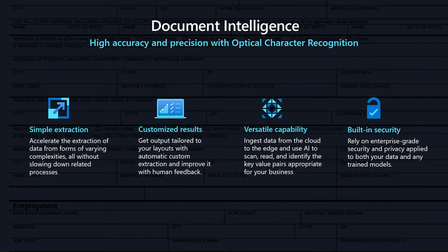With Document Intelligence, you have high accuracy and precision with optical character recognition, but it's more than that. You can extract data from different forms and documents. You can also get output tailored to your own layout with auto-customization and improve with human feedback. You are able to ingest data from the cloud to edge and use AI to scan, read, and identify the key value pairs appropriate to your business. Document Intelligence also has built-in security where you can rely on enterprise-grade security and privacy.